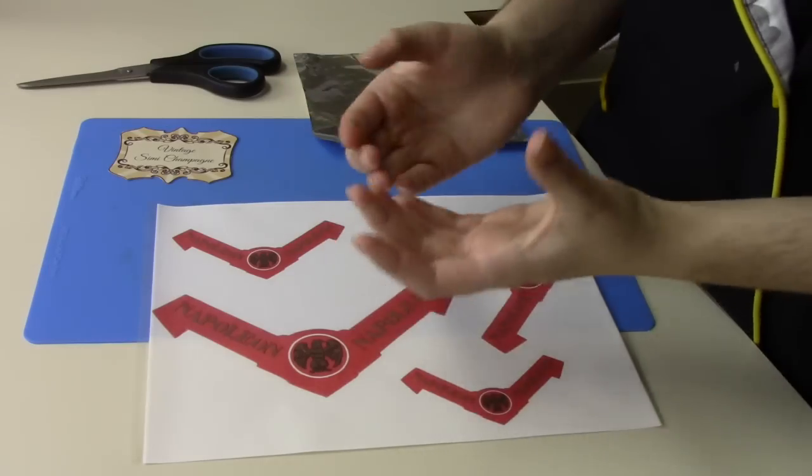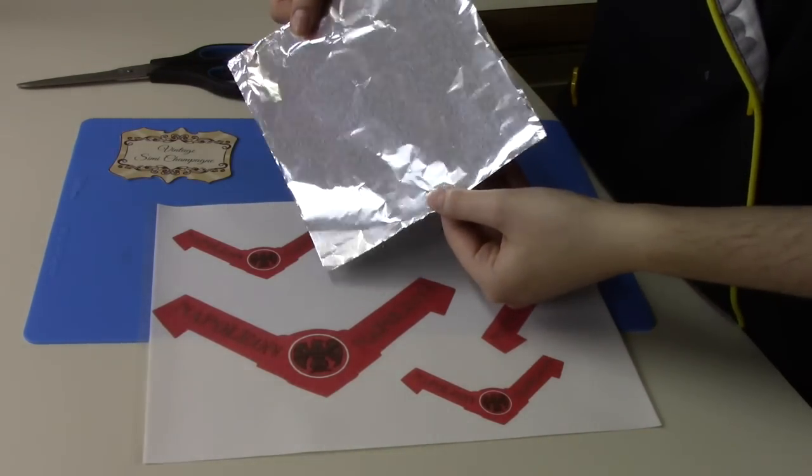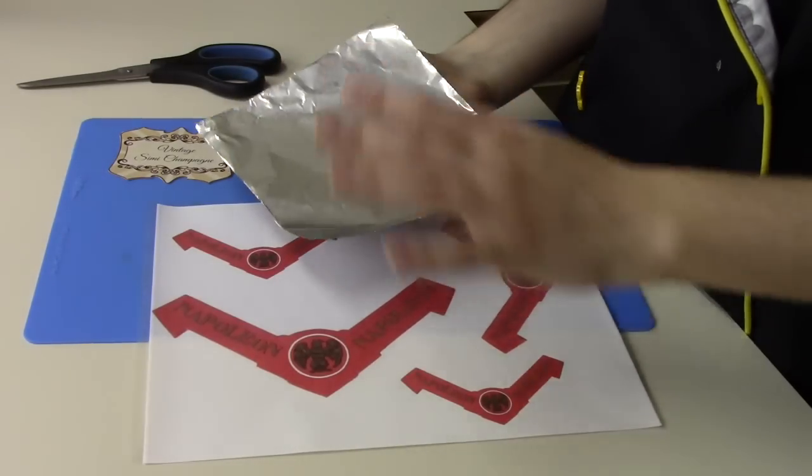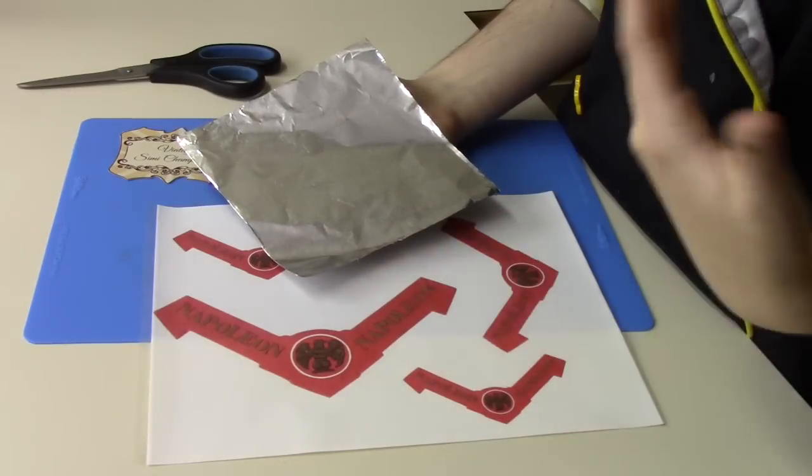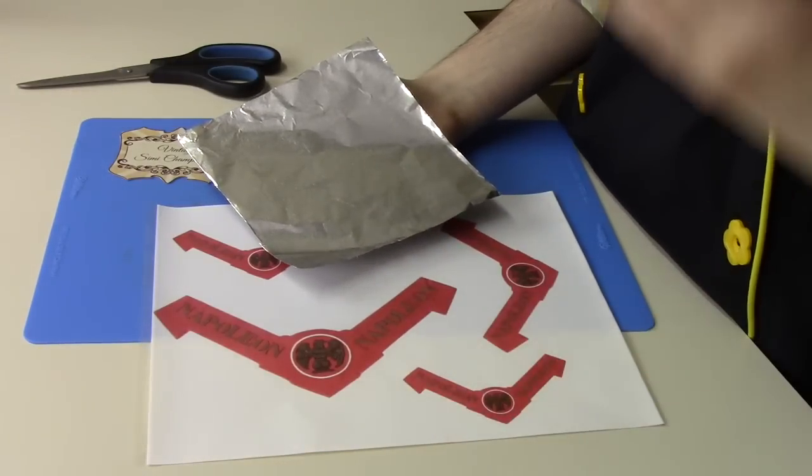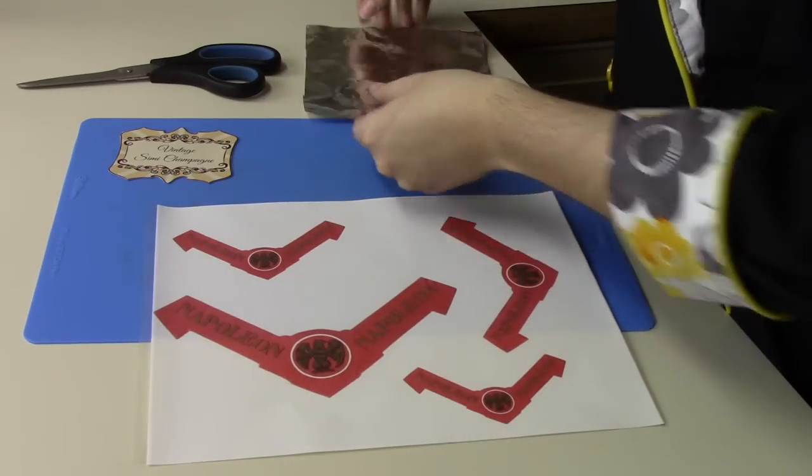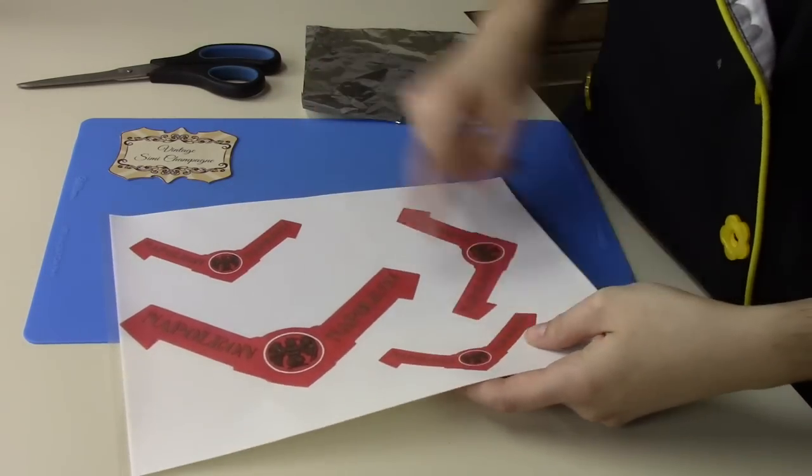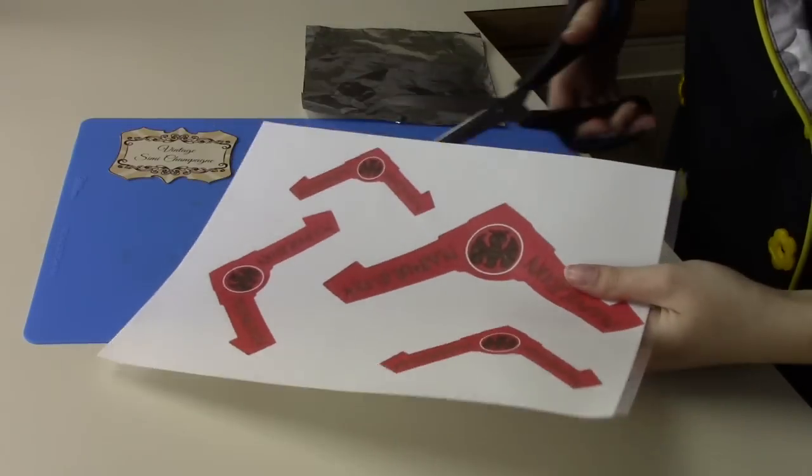And now I'm going to go ahead and cut out the label that's going to go around the neck. Now for over top of the neck where the cork is, I am going to use this piece of foil here that I just cut into a square to wrap around the top just above where the neck label is going to go. Now if you wanted to keep this completely 100% edible, you definitely could also use gold leaf. But I'm going to just go ahead and use my piece of foil here and cut out with scissors my neck label.